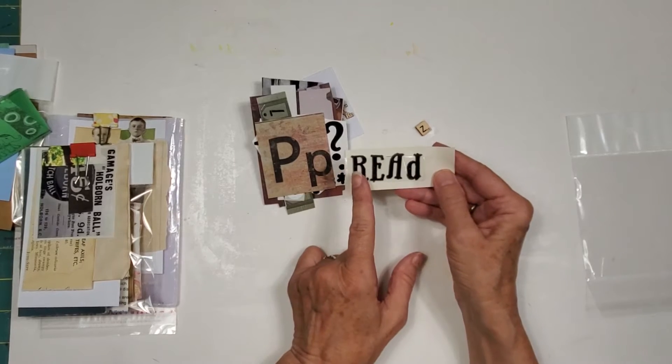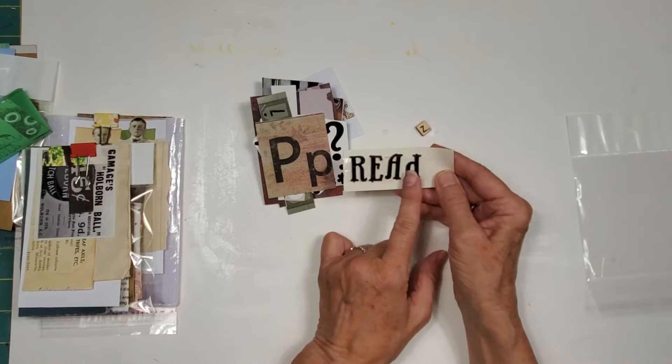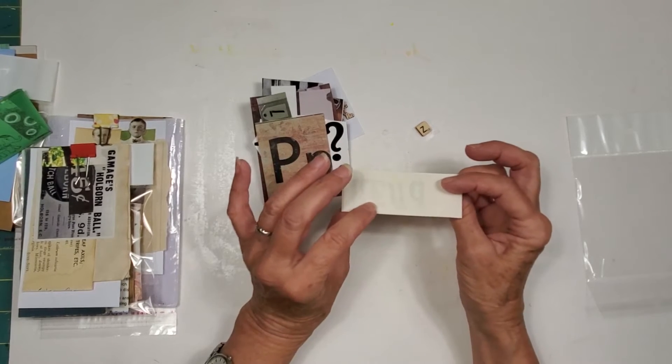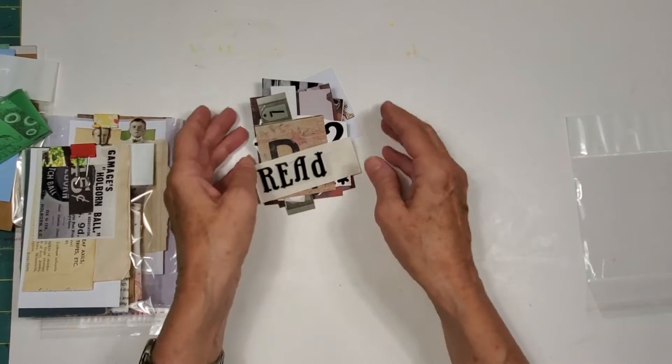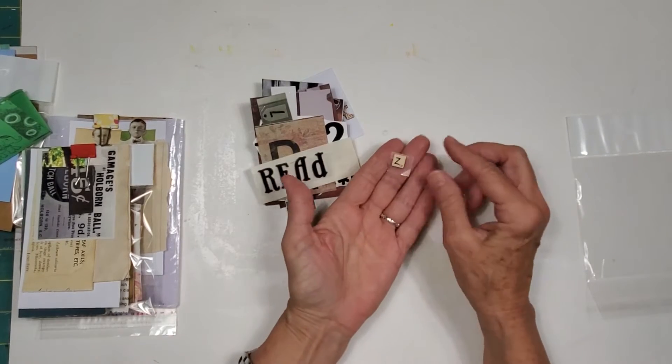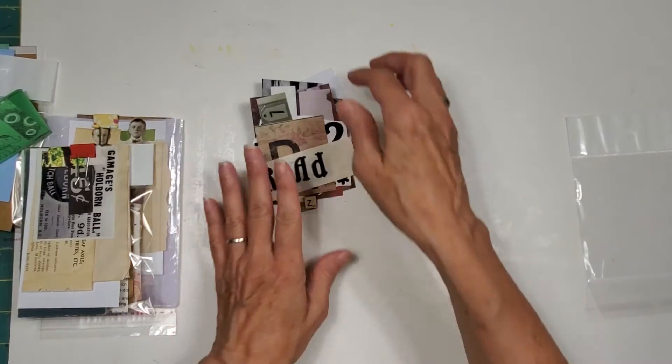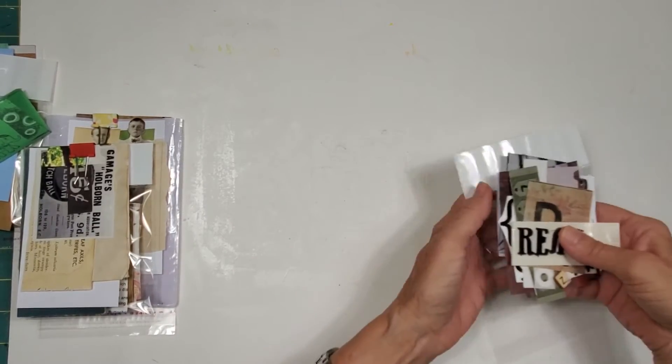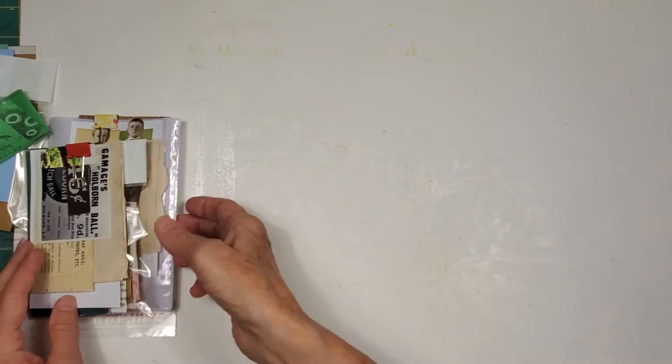And then I did some Tim Holtz grunge board, not grunge board, but Tim Holtz letters. And I thought that those were really cool, put those together on a piece of paper. And this one says read, they all say different things. Each kit will say something different. And then of course, a Scrabble tile really kind of just rounded that, really did round that little kit out. So you can see a lot of possibilities with that kit.